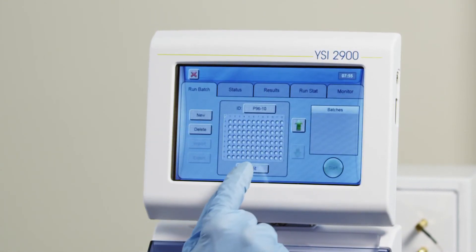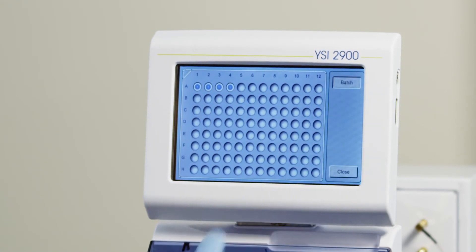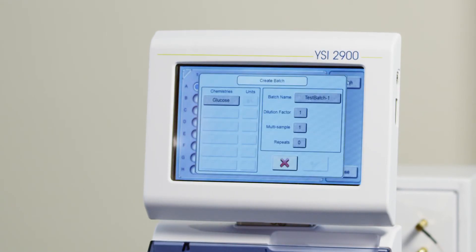Select Edit, and select the tube locations for each sample in the batch. When you are finished, press Batch, and select the chemistries that you'd like to run for each sample.